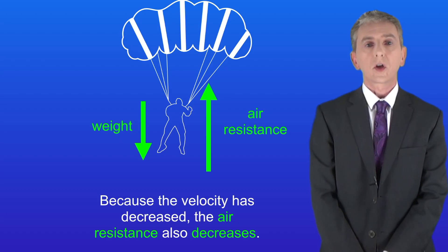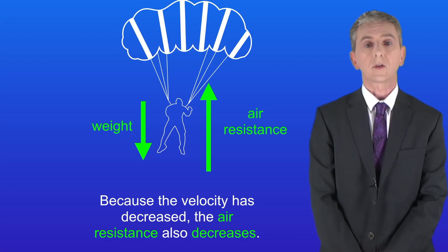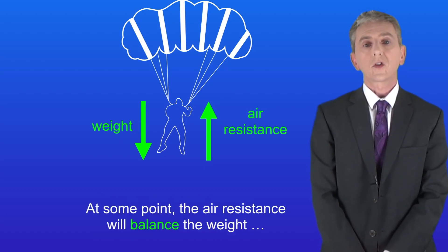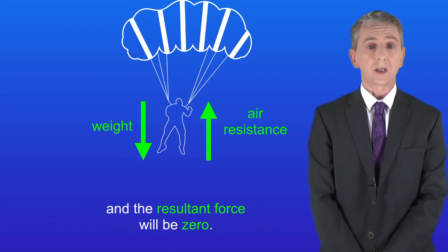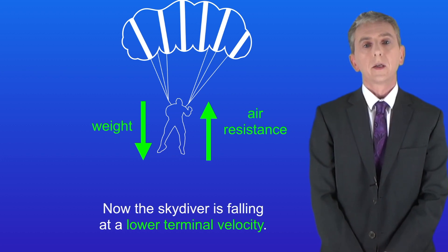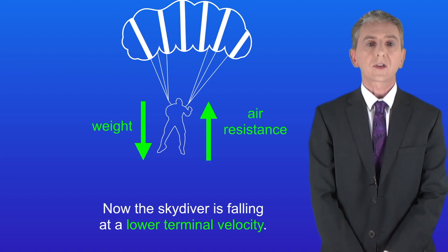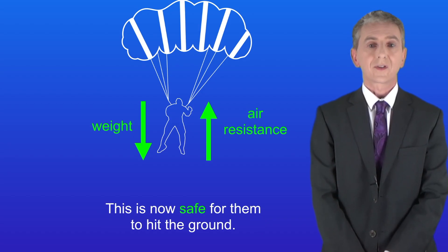Because the velocity has decreased, the air resistance also decreases. At some point the air resistance will balance the weight and the resultant force will be zero, so the velocity stays constant. The skydiver is now falling at a lower terminal velocity, which is safe for them to hit the ground.